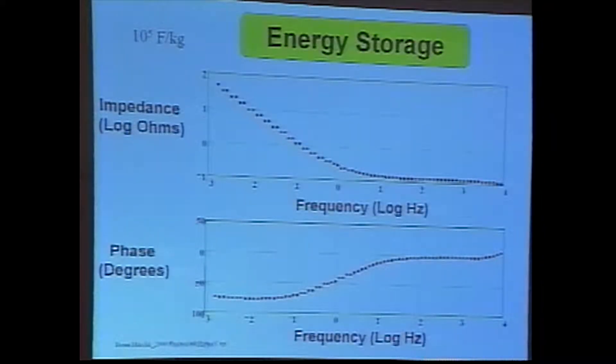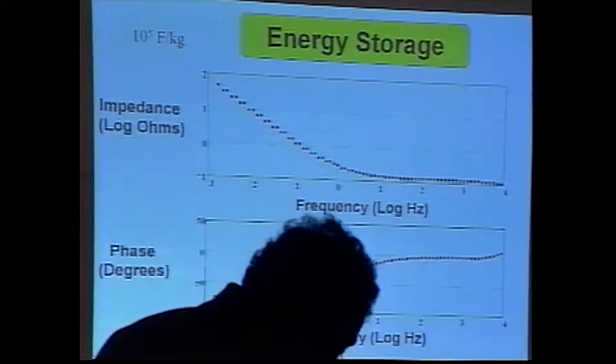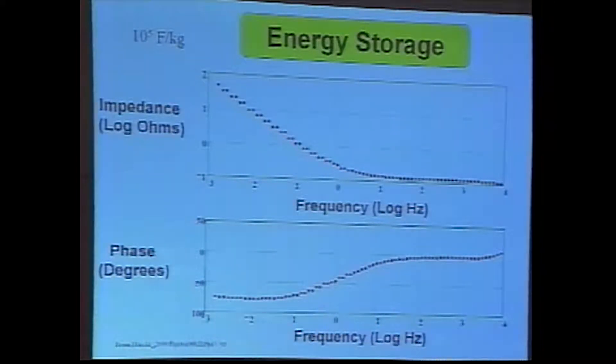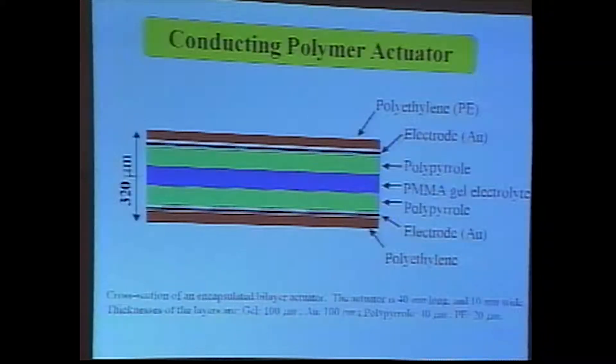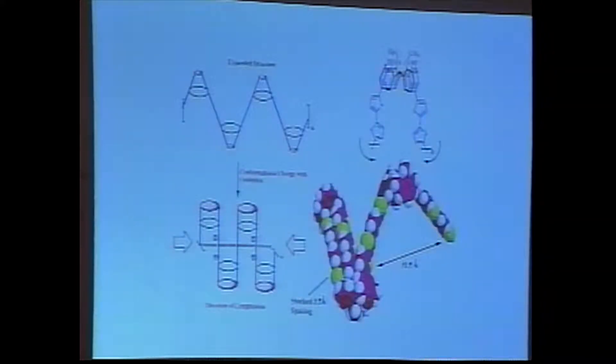We've created supercapacitors out of these materials. They have a low bandwidth, very low bandwidth. But we can store something in the order of 10 to the 5 farads per kilogram. That's orders and orders of magnitude greater than, for example, a tantalum capacitor that is normally regarded as a high energy density capacitor.